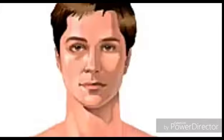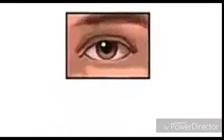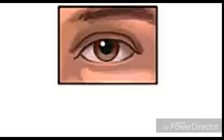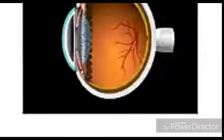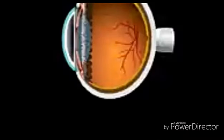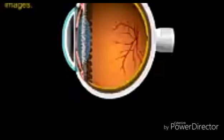Vision is the dominant sense for most people with sight. The organ of sight is the eye. Think of it as a slightly irregular, hollow sphere that takes in light and translates it into images. If we enlarge the eye and look inside it, we can discover how that's done. Inside the eye are various structures working together to create an image the brain can understand.